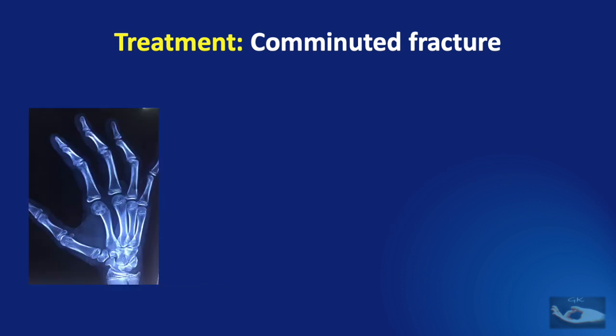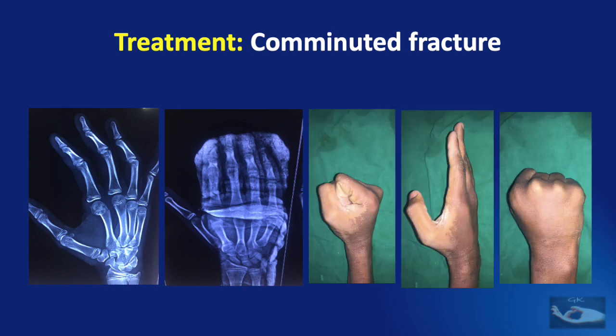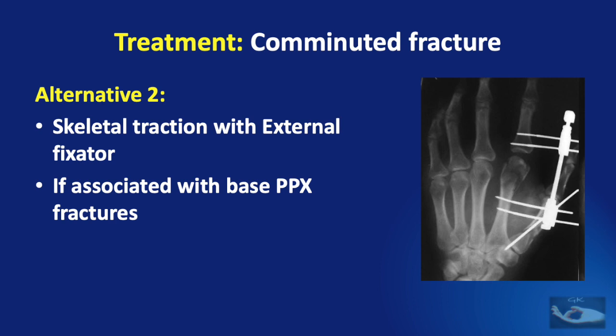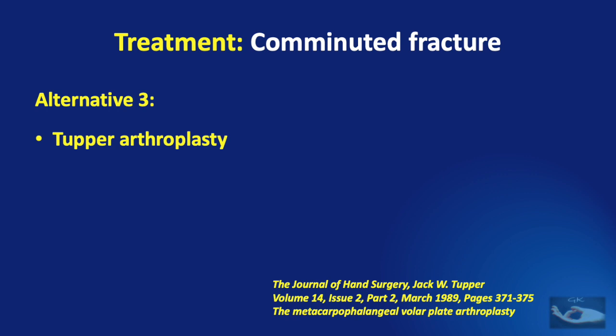An example shows a metacarpal head fracture managed conservatively with a POP slab and the resulting range of movements. The next alternative is the use of skeletal traction with an external fixator, which can be done if there are associated base of proximal phalanx fractures or skin loss. The third alternative is the Tupper Arthroplasty technique described by Jack Tupper in 1989.